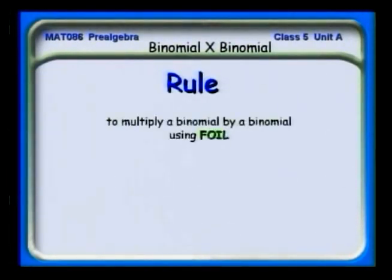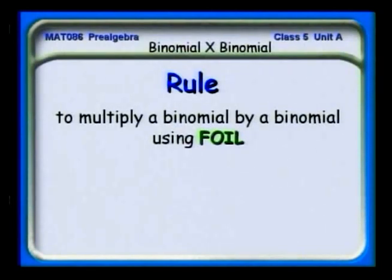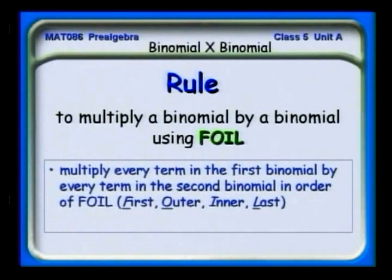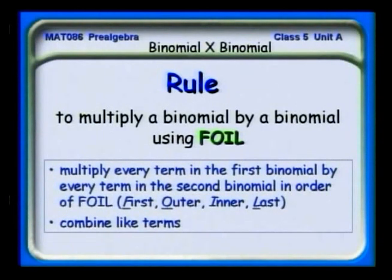Here's the rule: to multiply a binomial by a binomial using the FOIL mnemonic, multiply every term in the first binomial by every term in the second binomial in the order of FOIL — First, Outer, Inner, and Last — and finally, combine like terms.